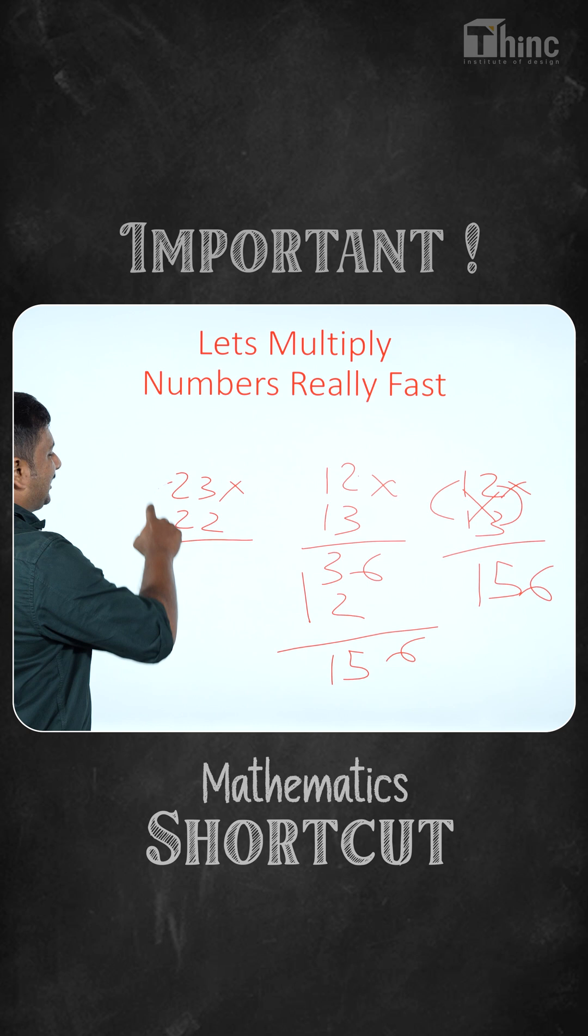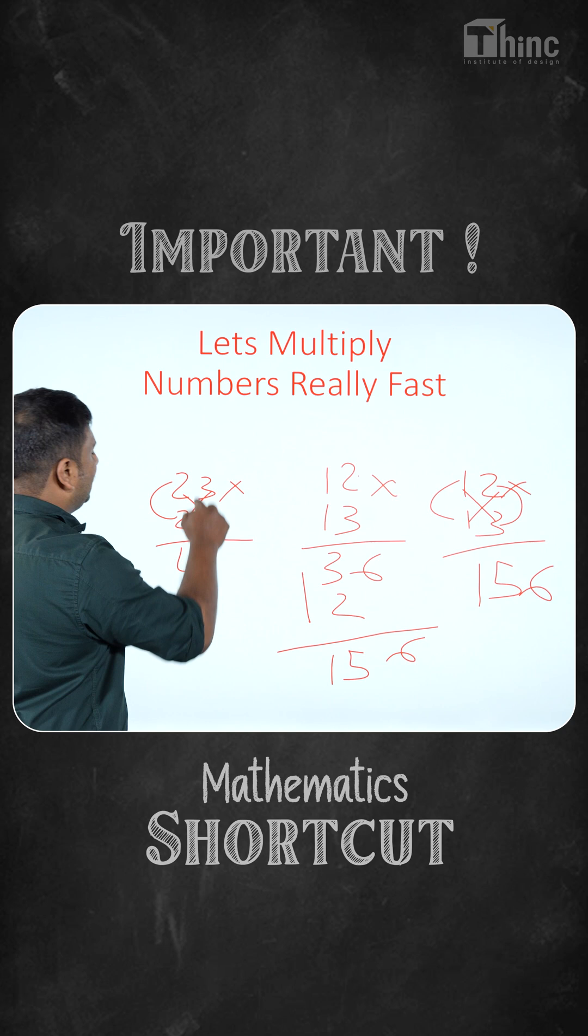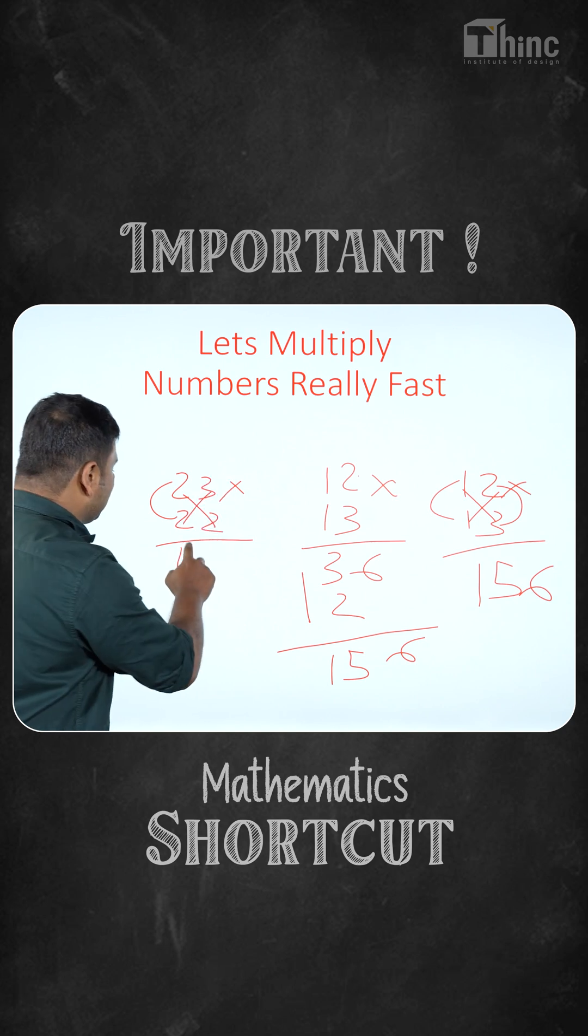So let's do 23 x 22, multiply the first two, 2 x 2 that is 4. Now cross multiply and add the numbers. So we have 4 plus 6 and 4 plus 6 is 10.